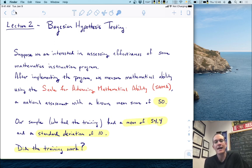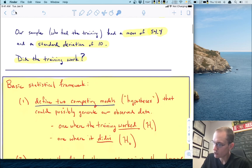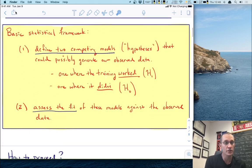So after seeing that data I want to know did the training work? How do we answer that question? Now of course we know the answer to how to begin thinking about this question because we have a basic statistical framework. First we define two competing models, we sometimes call them hypotheses, that could possibly have generated these observed data. We have one model where the training worked, we call that the alternative hypothesis, and we have one model where it didn't work, we call that the null hypothesis.